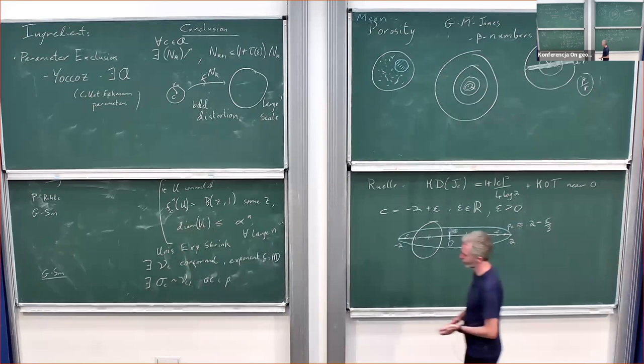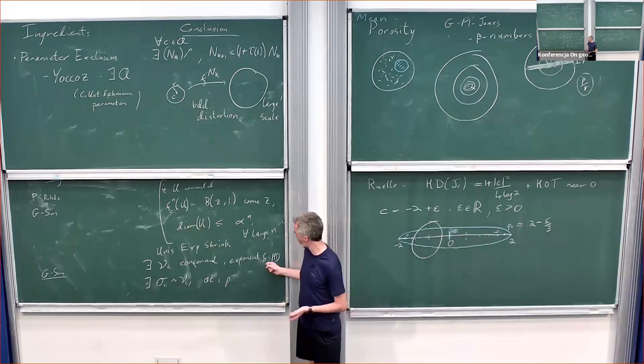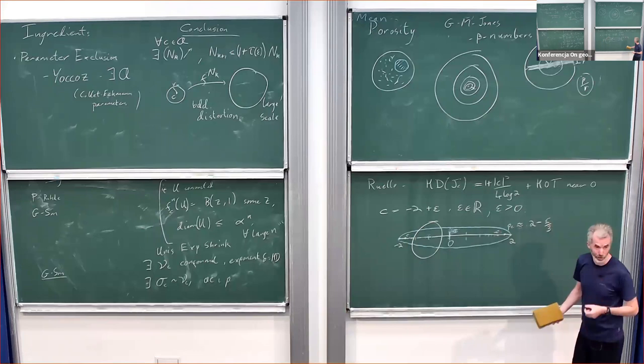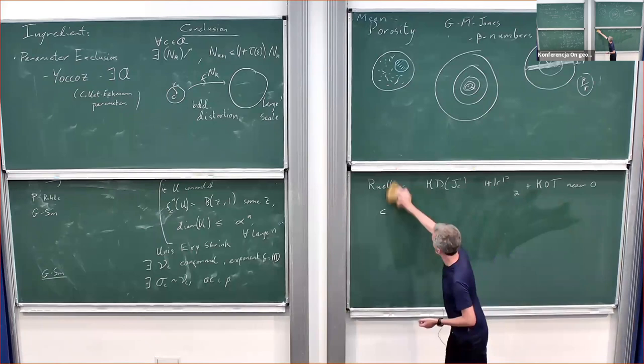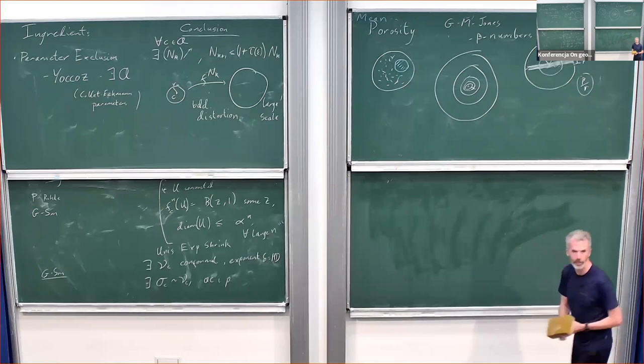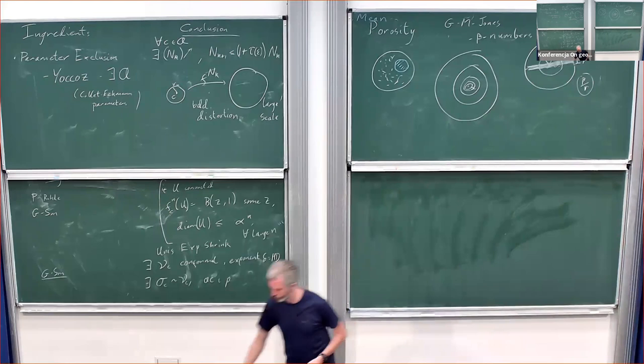A conformal measure is one whose Jacobian is the derivative to the power of the exponent, so for example Lebesgue measure has exponent equal to two. In the paper with Juan Rivera and Smirnov we call this property topological Collet-Eckmann, which is weaker than Collet-Eckmann and equivalent in the presence of one critical point.